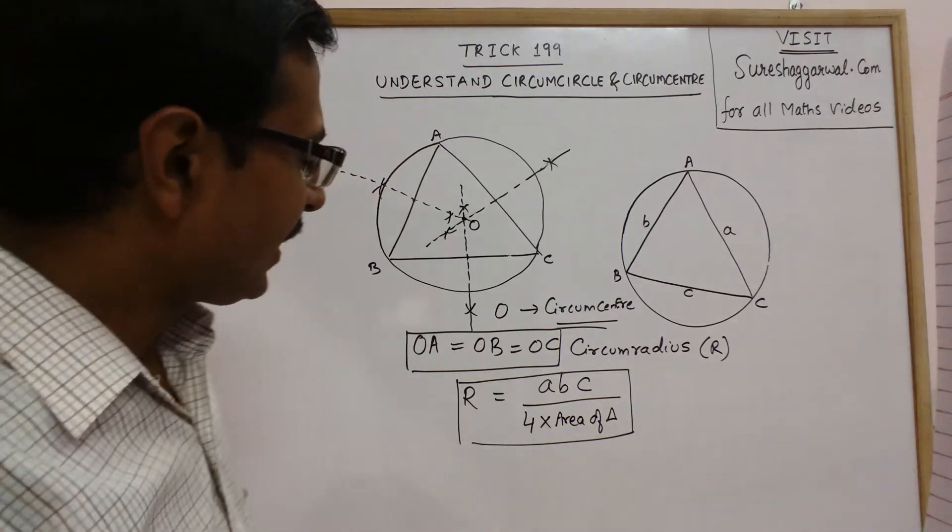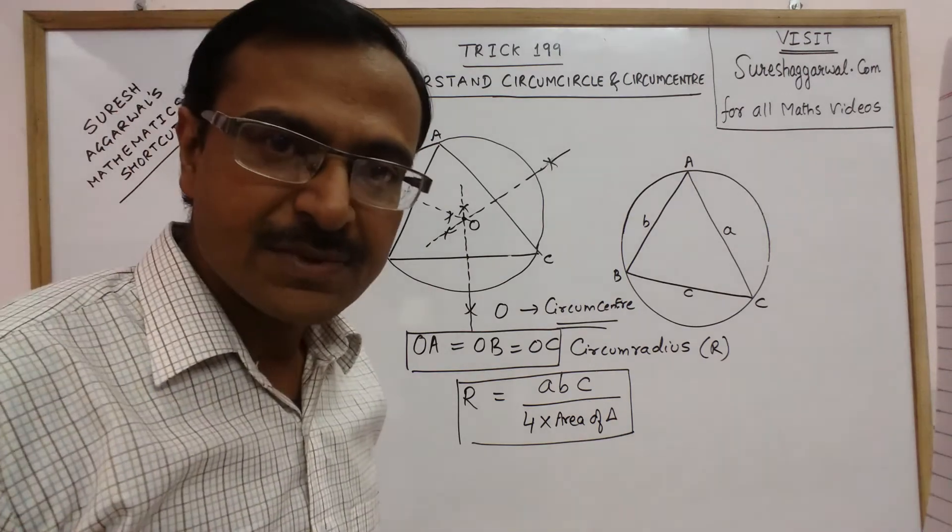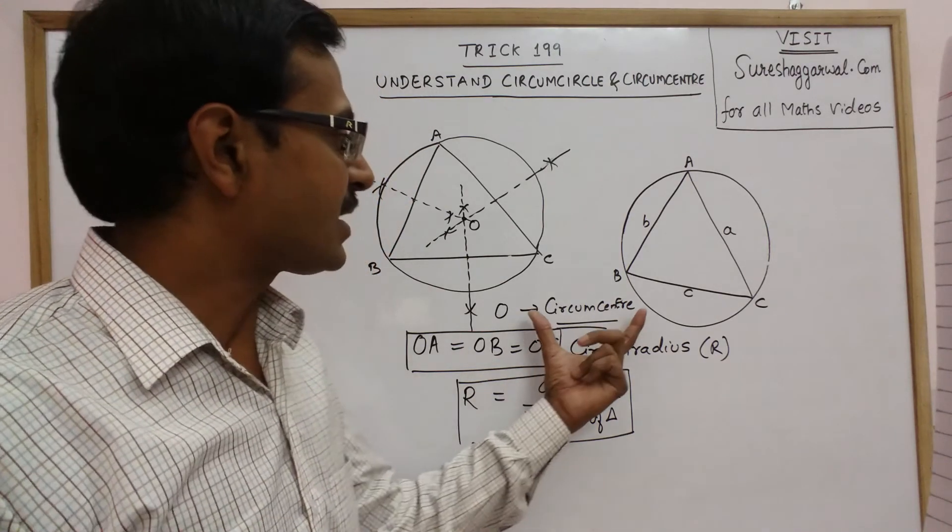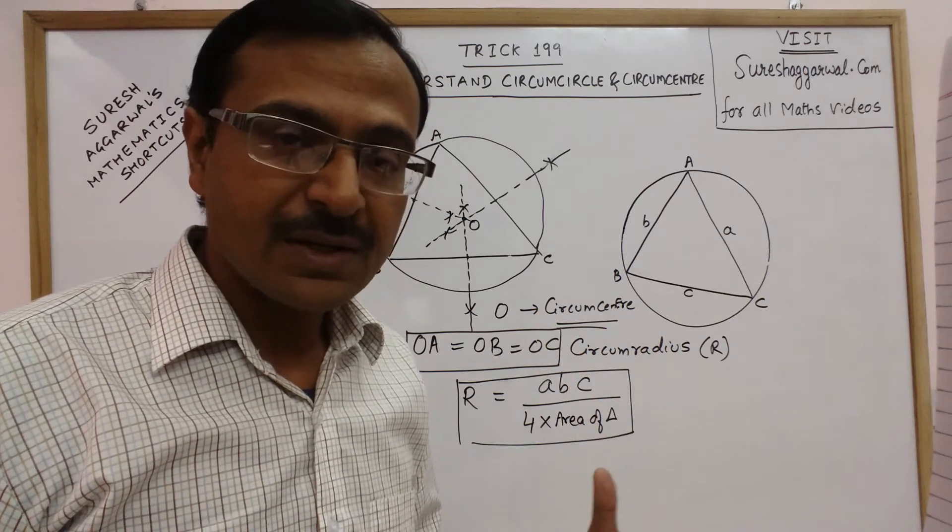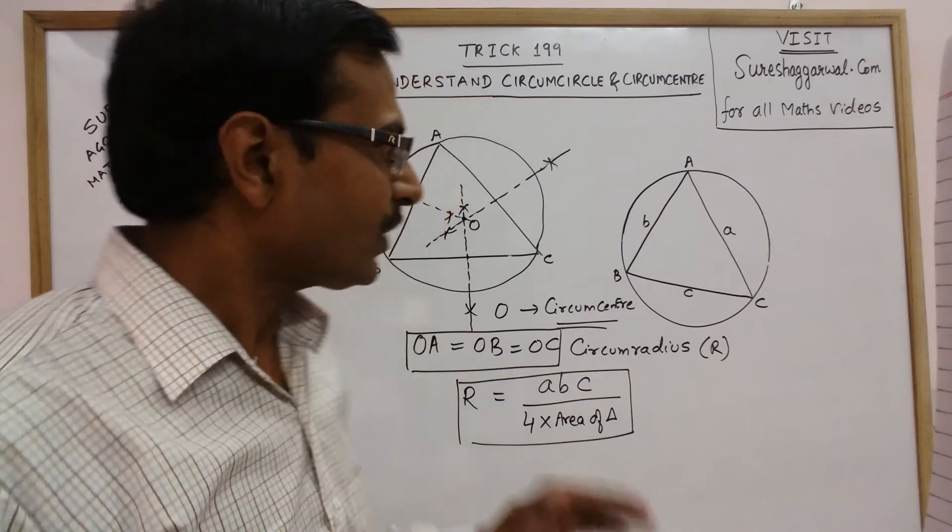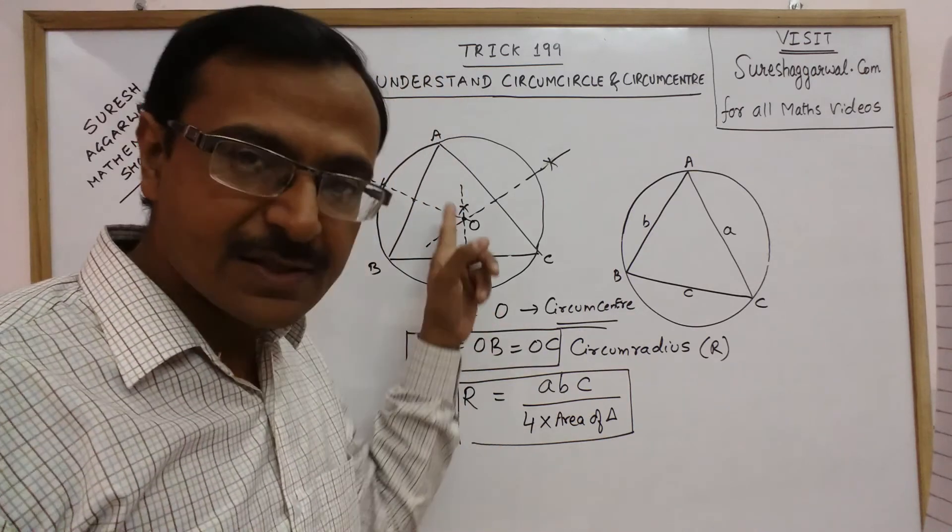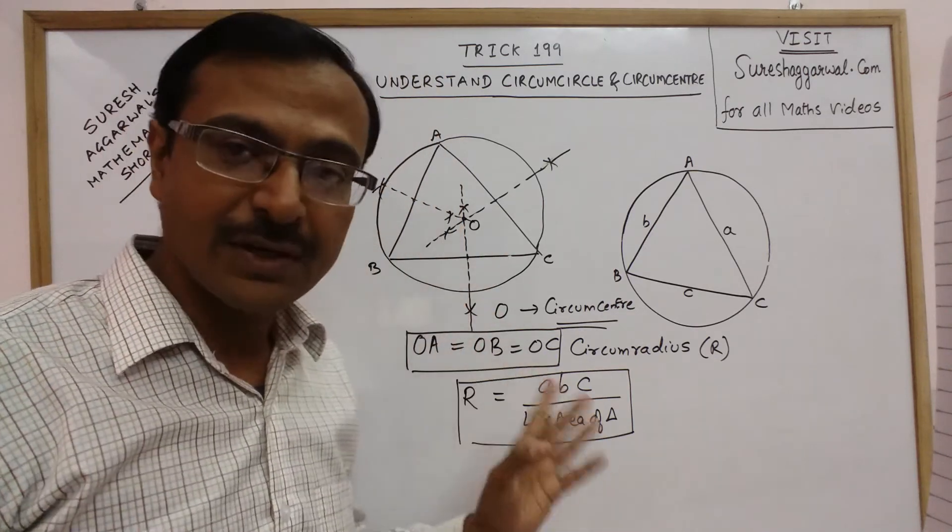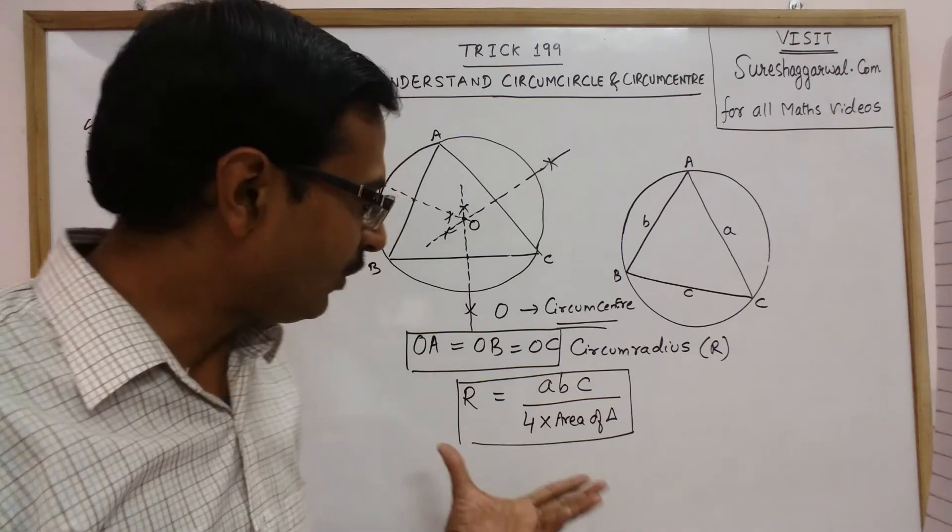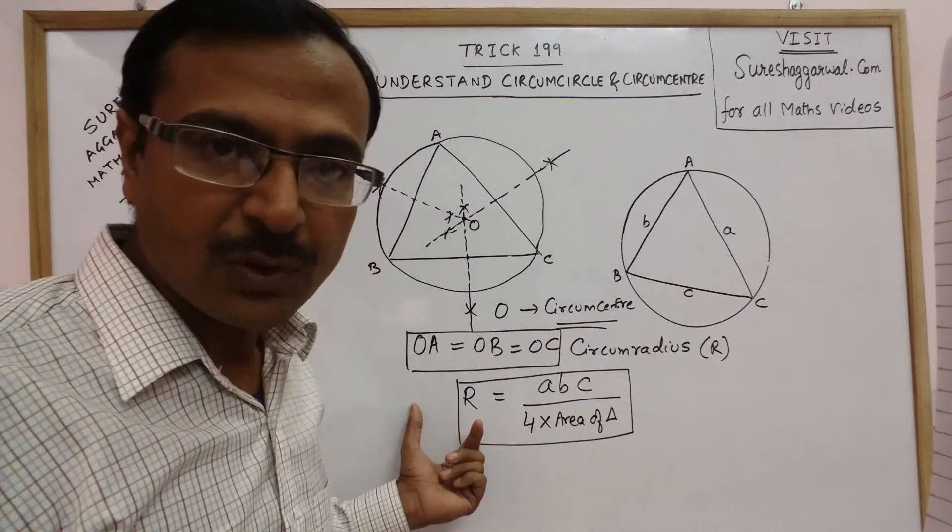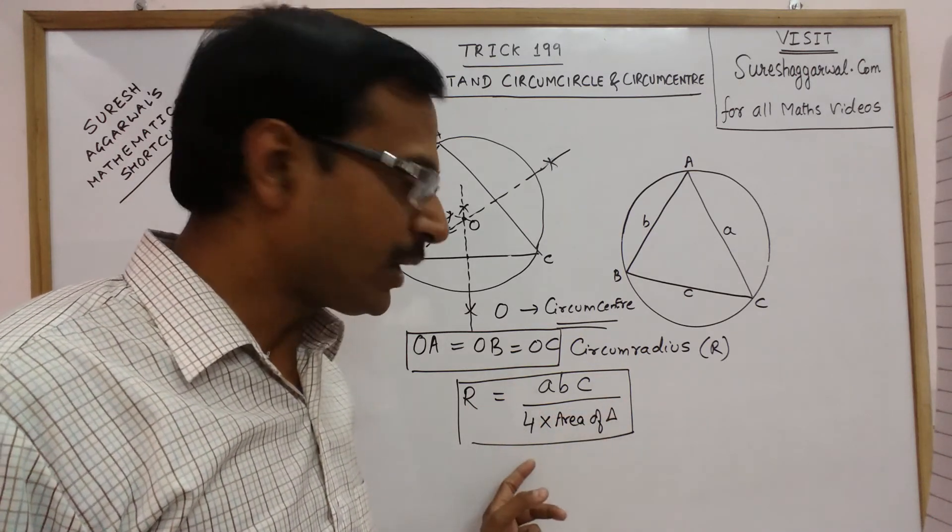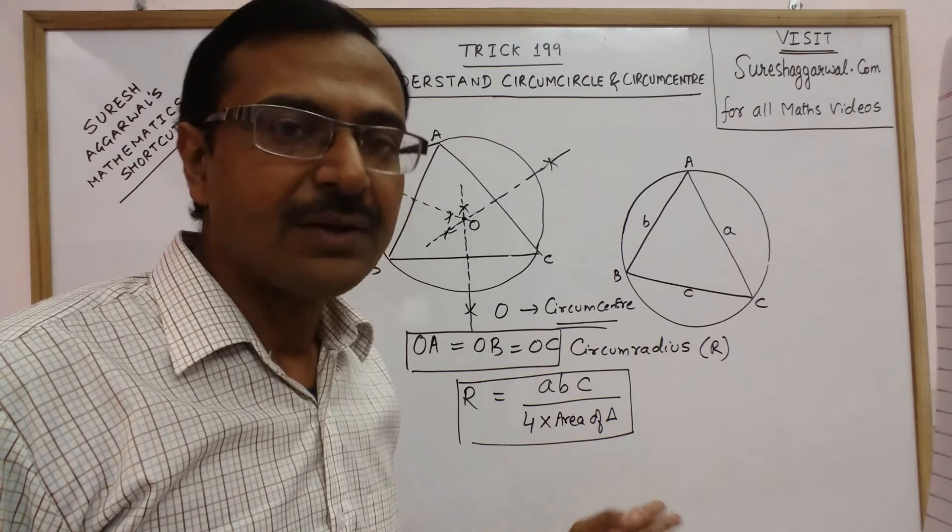Very important concept for competitive exams and all these concepts, that is what is a circumcenter. Circumcenter is the point of intersection of perpendicular bisectors of the three sides of the triangle and the value of circumradius that is found out by taking the product of the three sides upon four times the area of the triangle.